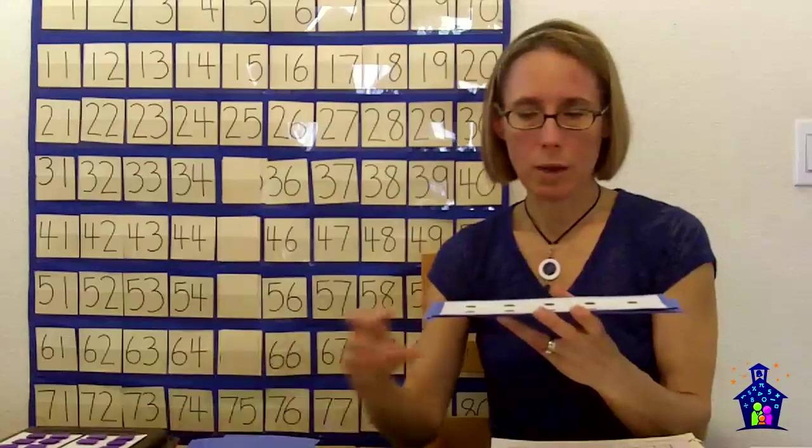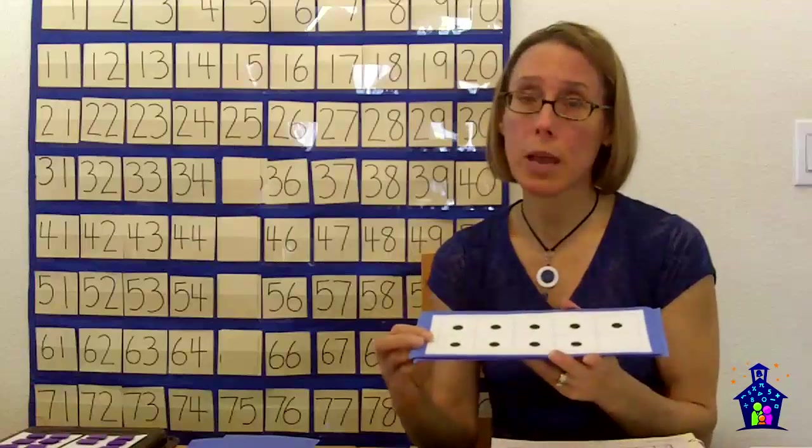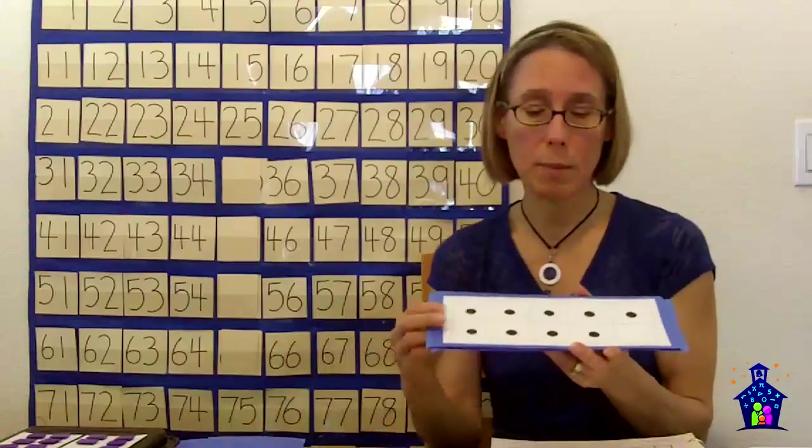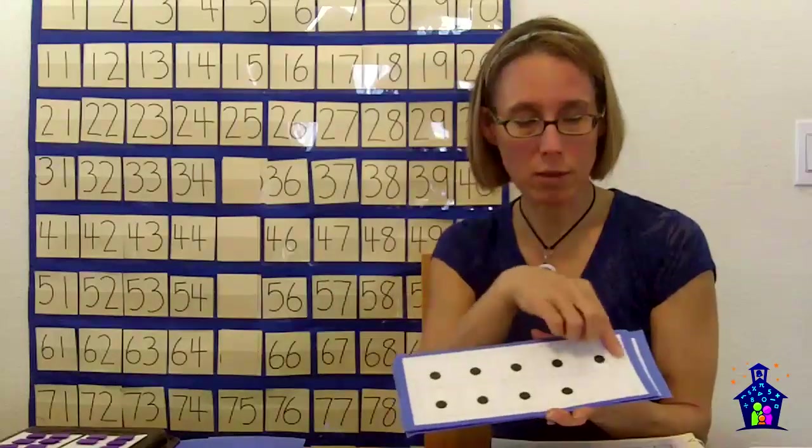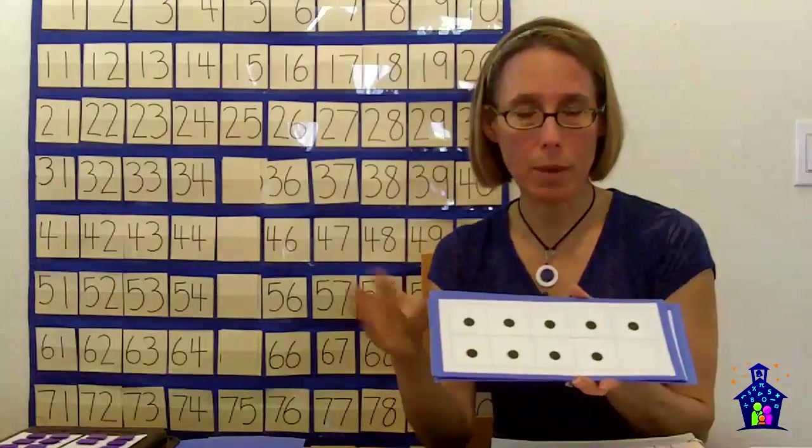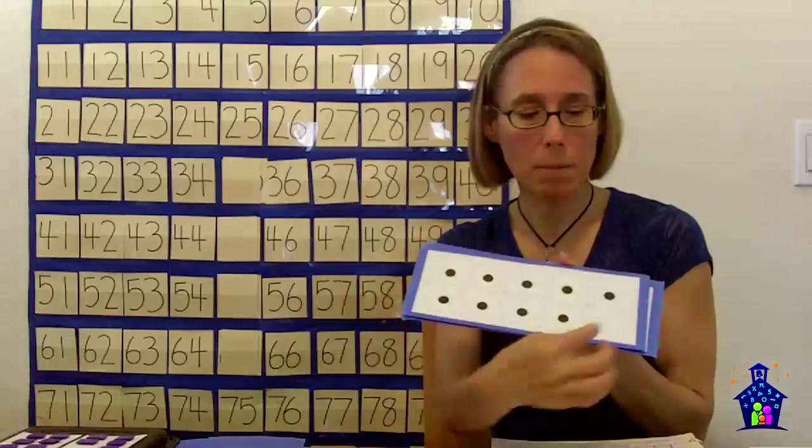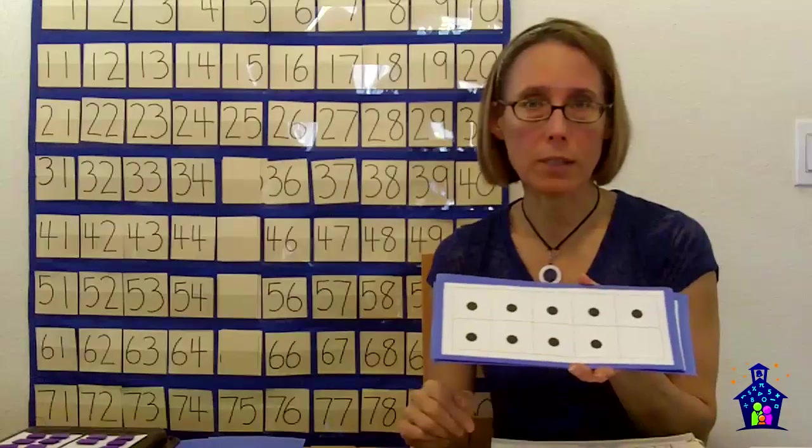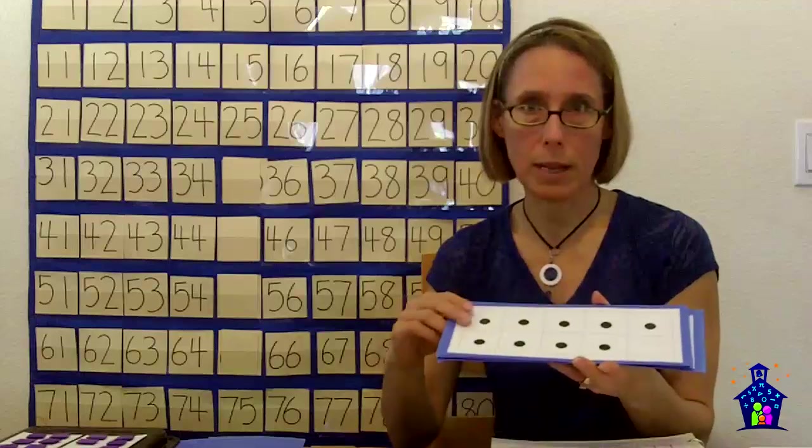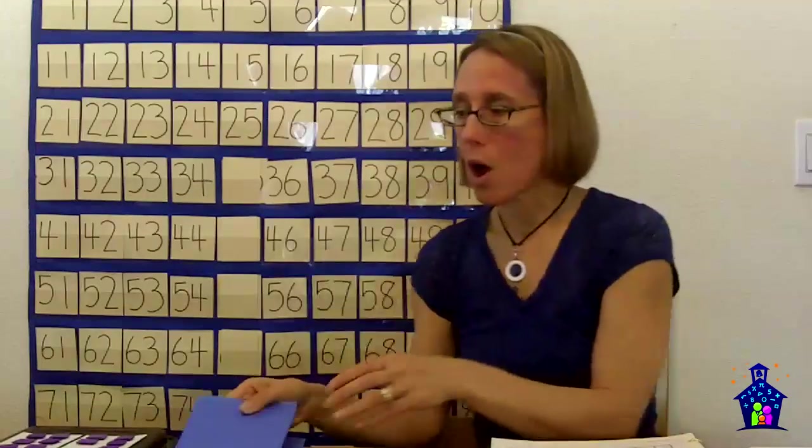I want them to really understand that this is five in that top and then one more than that is six. Six is made up of five and one - again, numbers are made up of smaller numbers. For some of these, I might say tell me how many are missing. Now they need to know that there's ten dots all together. So ten minus the one, or minus these nine, gives me the one that's missing there.